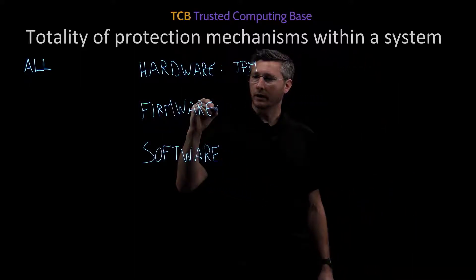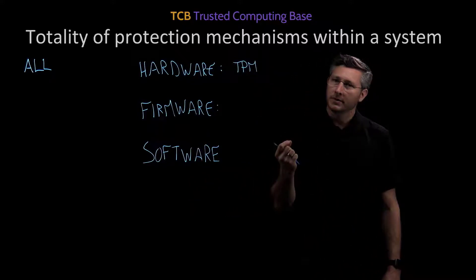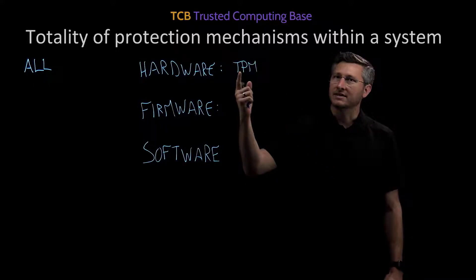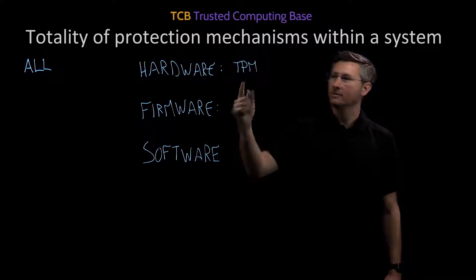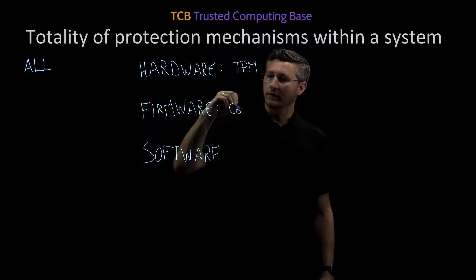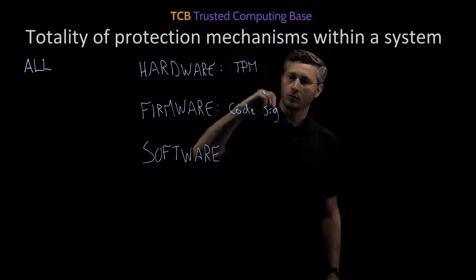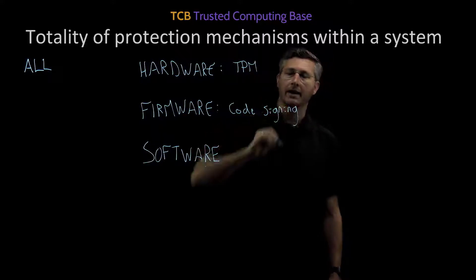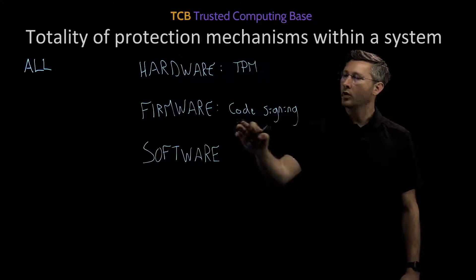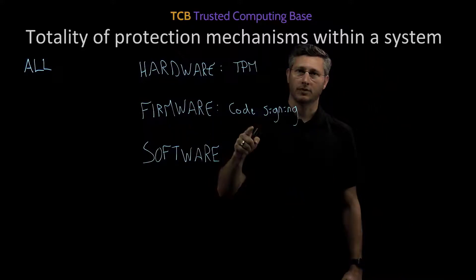What about firmware? Firmware is the low-level bits of software that control the hardware. An example of a protection mechanism within firmware would be something like code signing. We want to make sure that the firmware running on a system is the actual firmware created by the manufacturer, and that it hasn't been modified by any attackers. Code signing would be an example of a firmware protection mechanism.